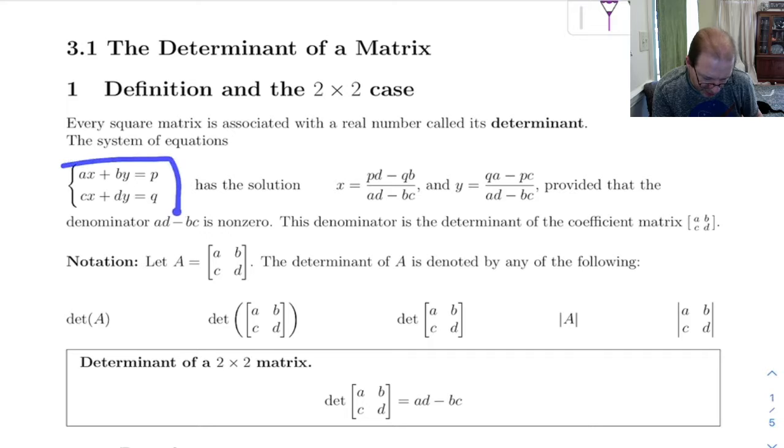So suppose you have this as your system of equations. If you worked this out to get the solution, you can solve it and get x is this and y is that. Now that ad minus bc is the denominator and that is the determinant of the coefficient matrix.